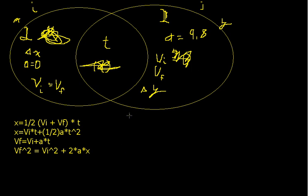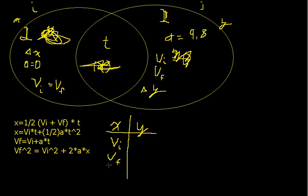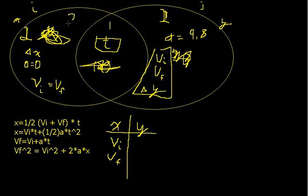So next time you're given a projectile motion problem, write up a t-chart with x and y. Say we have the initial velocity in x, which means we also have the final velocity — remember that counts as two. They are almost always going to give you time, but they might not. Say they give you initial velocity, final velocity, and displacement — you look at your equations, plug that in and it gives you t. Once you have t, now you have the values in both circles and you can solve for what you need.